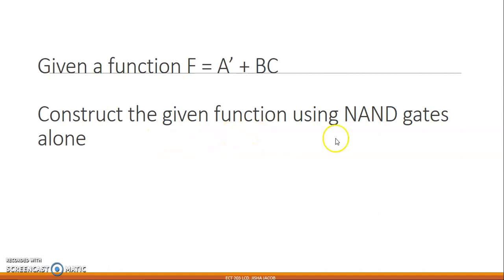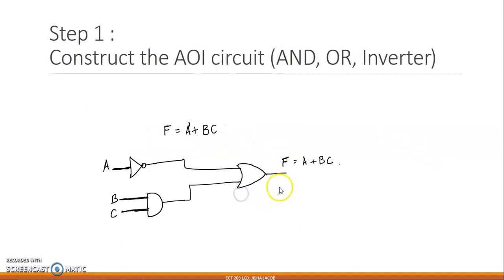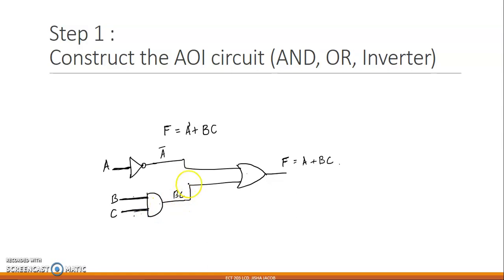If you are asked to construct the given circuit using NAND gates alone, the first step is to construct the circuit as you would normally using AND gates, OR gates, and inverters wherever necessary. For example, in this case you have a̅ + bc. a̅ is obtained by passing A through an inverter, and bc is obtained through an AND gate. These are combined at an OR gate to give f = a̅ + bc.